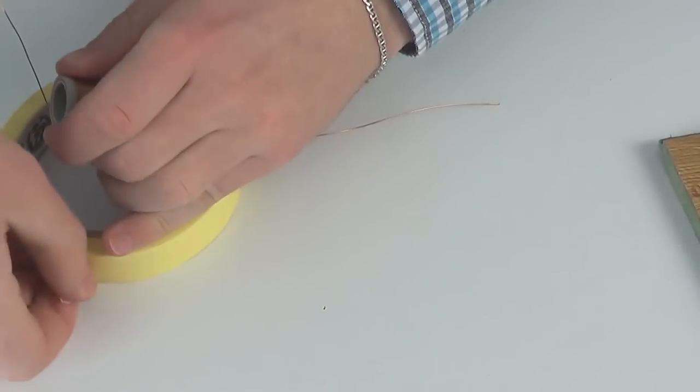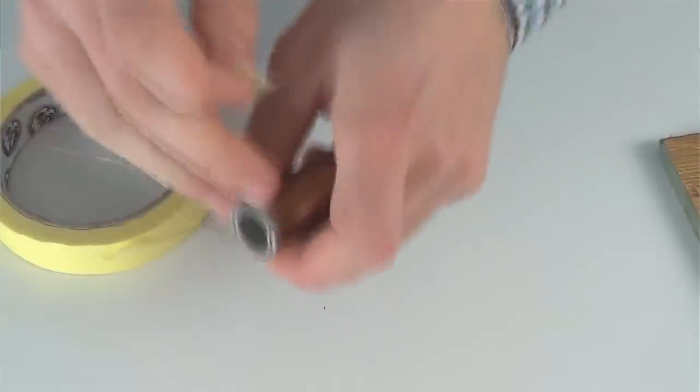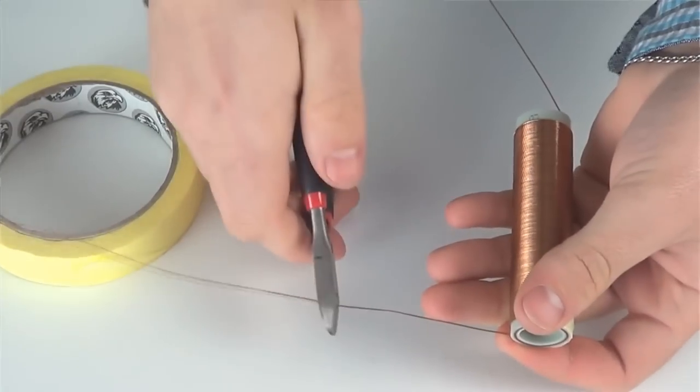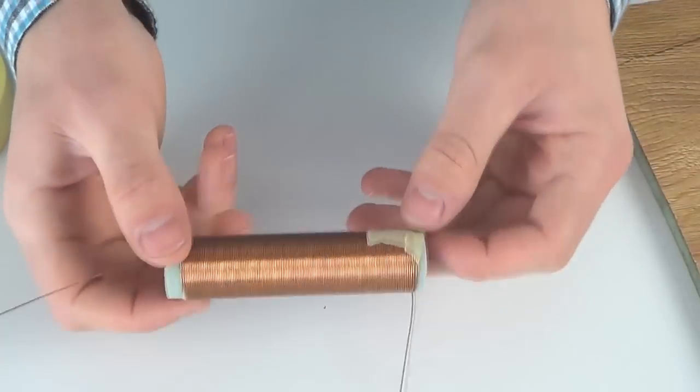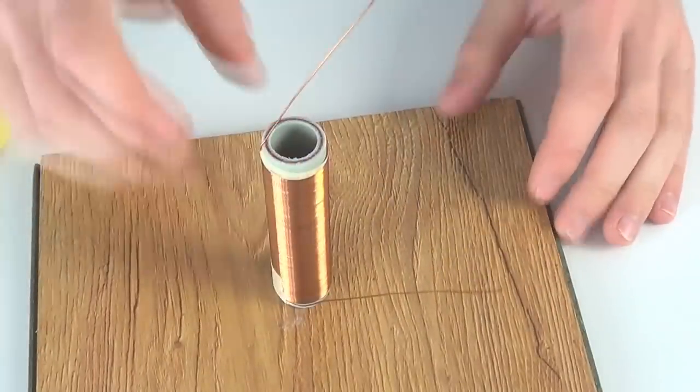We are fixing the wire with scotch so it won't unspool. That's all, the coil is ready and now we are sticking it to the base with glue.